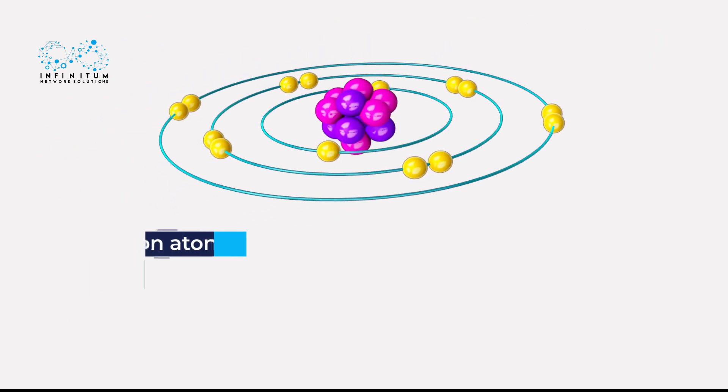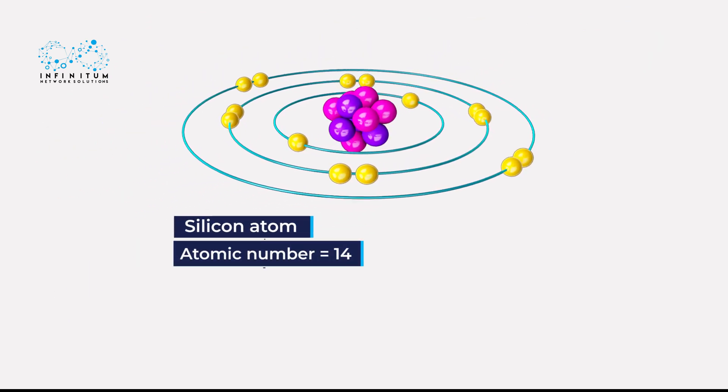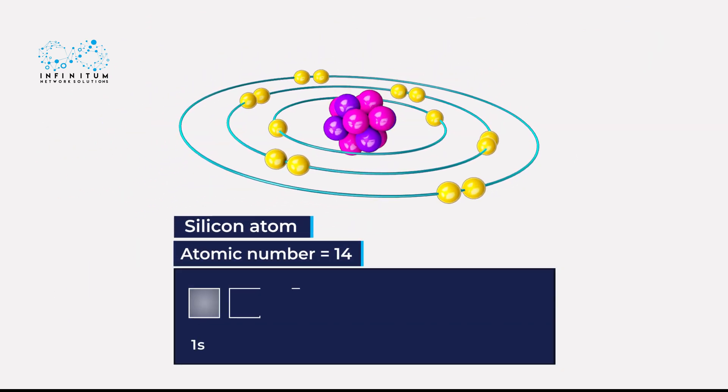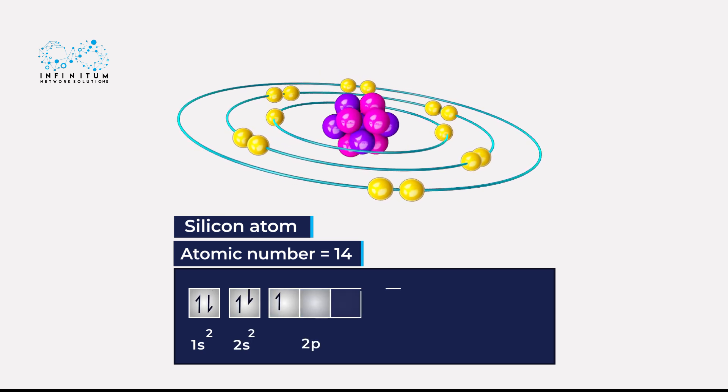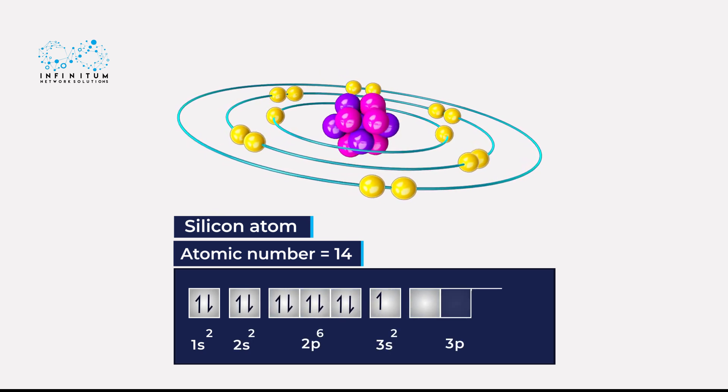Consider the example of silicon, whose atomic number is 14. Twelve electrons can be accommodated in 1s, 2s, 2p, and 3s orbitals.